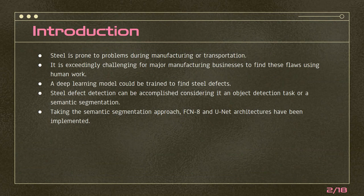So we decided to see if a deep learning model can help us detect these damages or flaws. According to previous works done on this subject, we concluded that we can consider it both an object detection task or a segmentation task. But our images were more like a texture form than some object in a specific place, so we decided to take the segmentation approach and used two famous architectures: FCN8 and U-Net.